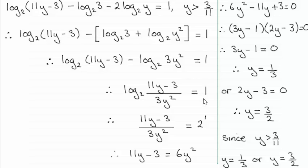And when you get to that stage you can anti-log it, get rid of the log. And so for this one, because we're working in base 2, we get 11y minus 3 over 3y squared equals the base, which we know is 2, raised to this power 1. So we've got 2 to the power 1.